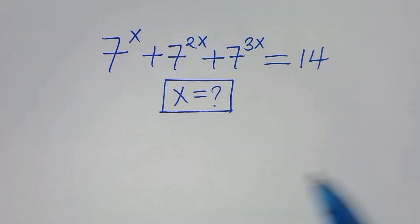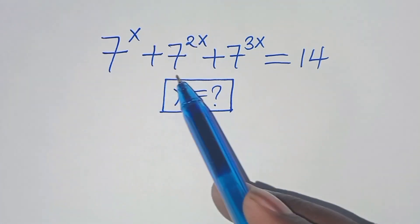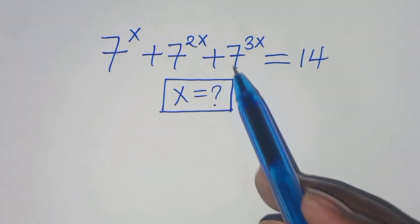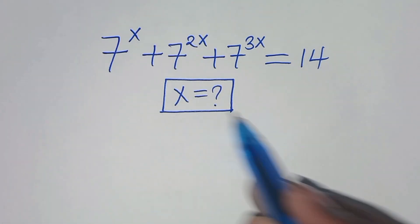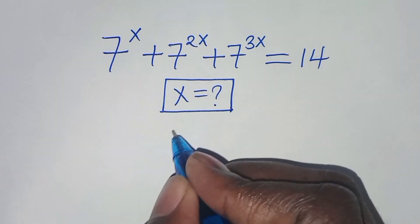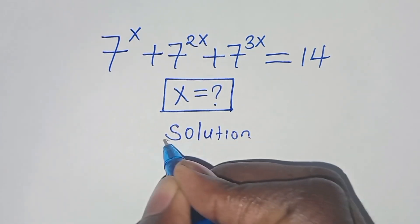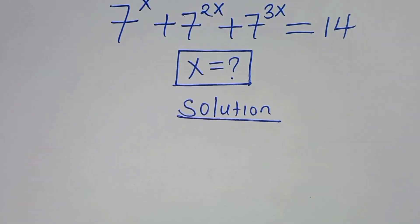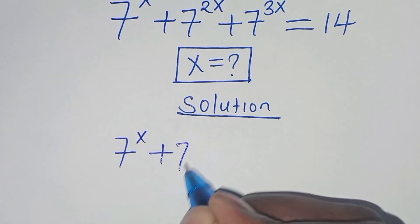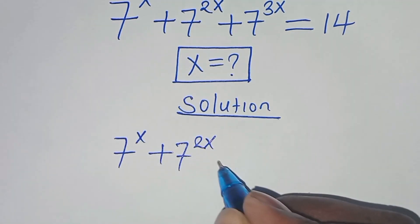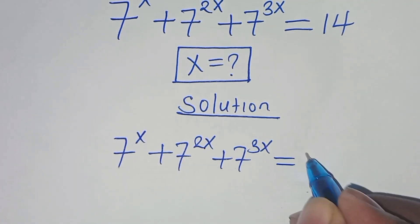Welcome. We're going to solve this algebra problem: 7 to the power x plus 7 to the power 2x plus 7 to the power 3x equals 14. What is the value of x? Let's present a solution from here.